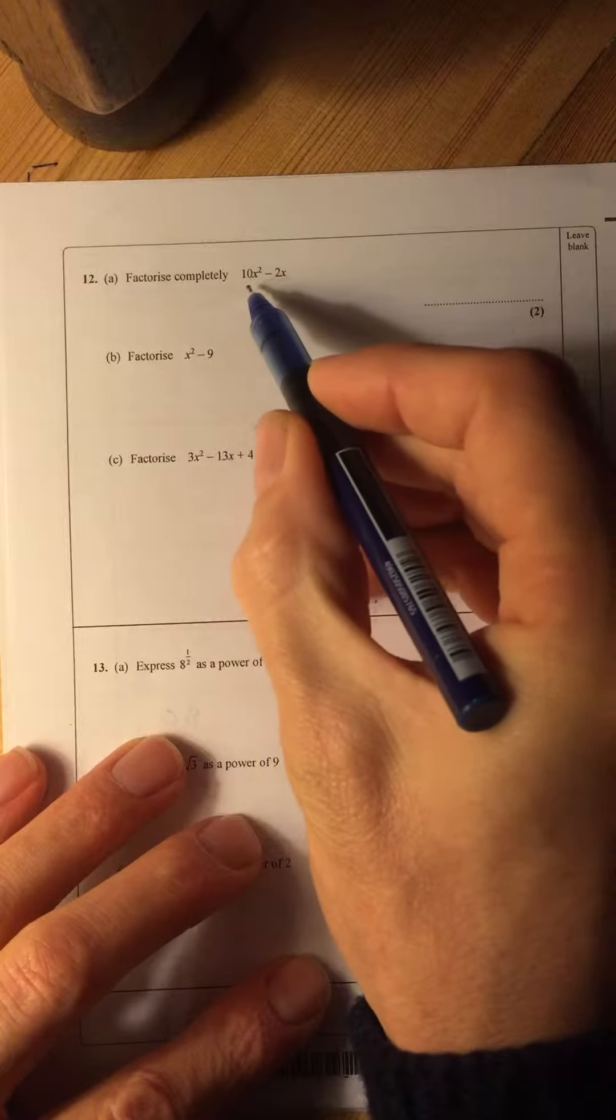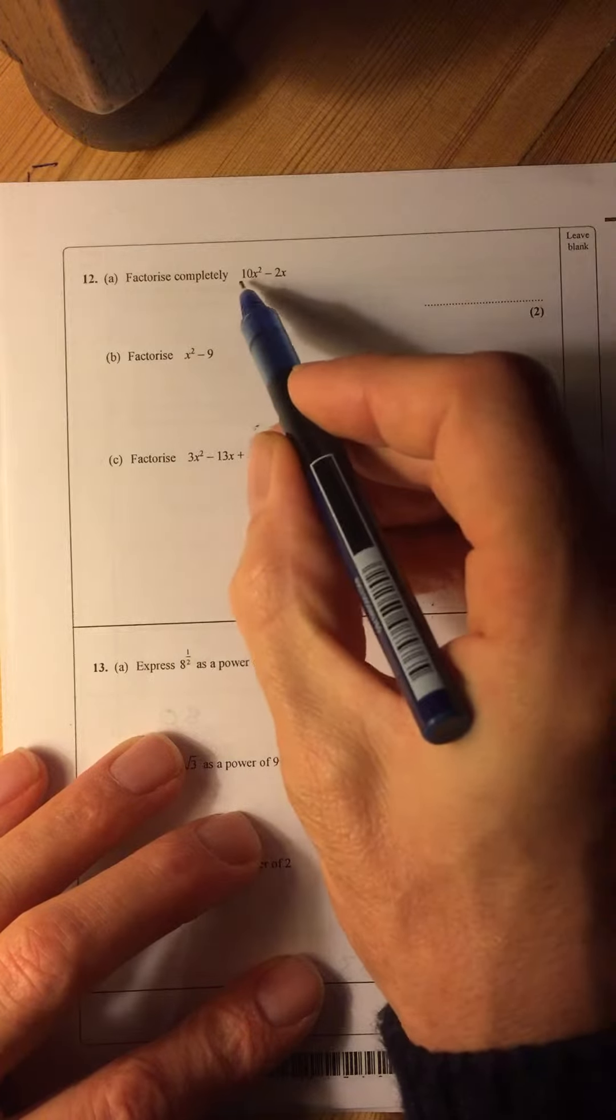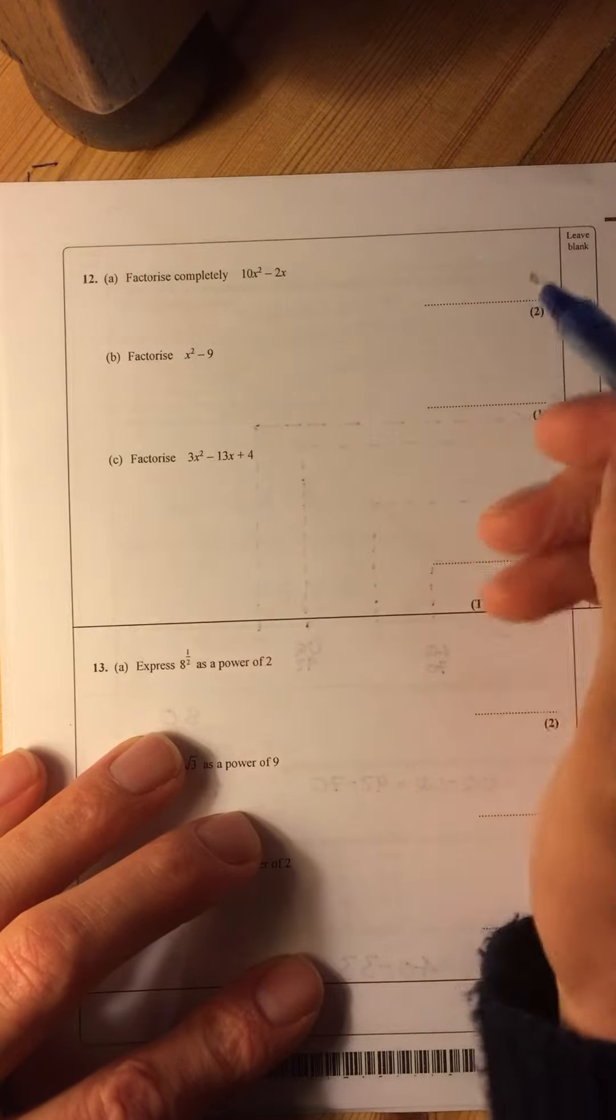Okay, factorise completely: 10x squared minus 2x. Not dissimilar from the factorisation we had earlier, except that we can now take a number as well as an x out.